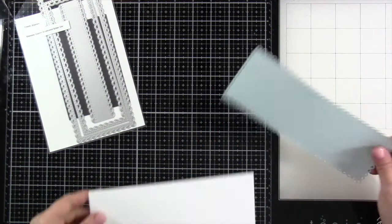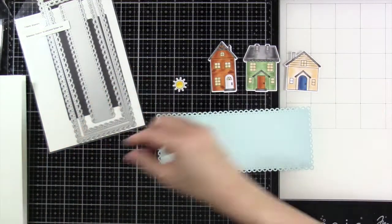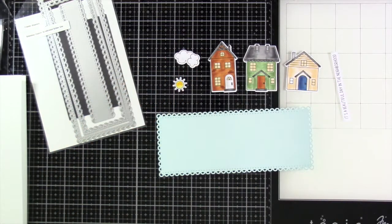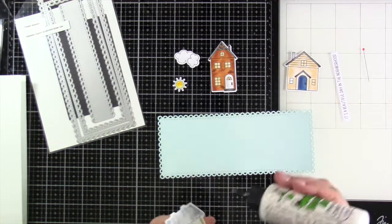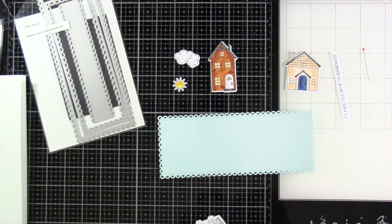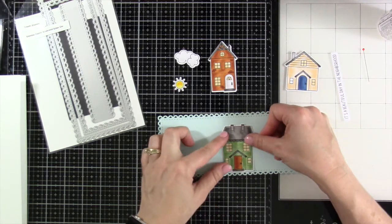Let's go ahead and make a quick card. I went ahead and used the biggest die in this set and cut that out of some light blue cardstock. I stamped, colored, and die cut some houses from It's a Beautiful Day in the Neighborhood, the new stamp set, and then now I'm just going to adhere down all of those houses to make this a fairly simple scene-based card.